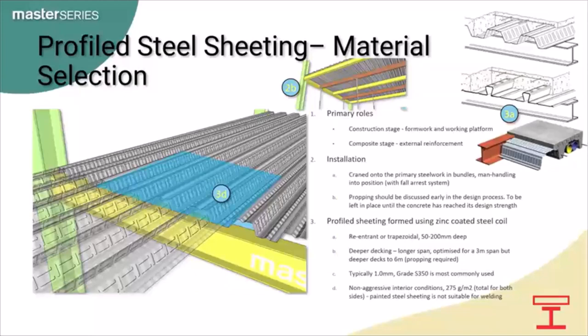Sheeting profiles are either re-entrant or trapezoidal — usually 50 to 60mm deep spanning around 3m unsupported, going all the way up to 200mm deep spanning around 6m unsupported. For increased resistance we can introduce additional reinforcement in the decking troughs. Grade S350 is most commonly used for the decking, and it's usually around 1mm thick. The dimples you see are known as embossments — they trap the concrete locally around the profile allowing for interlocking. For corrosion protection we have zinc coating of around 1kg over 4m², both sides, suitable for most non-aggressive cases.